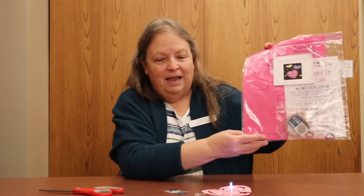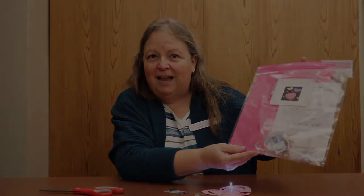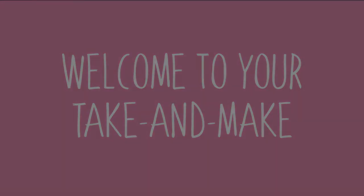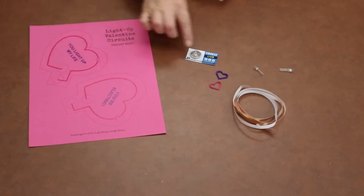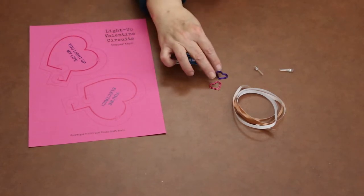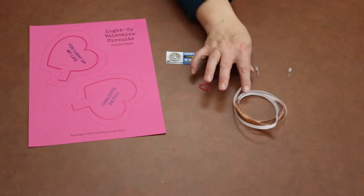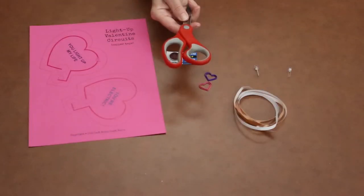You should have picked up your take and make bag, and in that bag you will find the following supplies. In your take and make bag you're going to find a valentine template, one battery, two paper clips, two lights, a length of copper tape, and then from home you will need a pair of scissors.